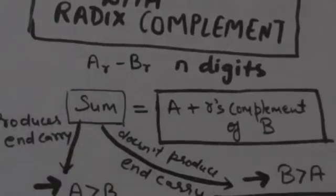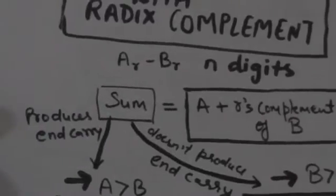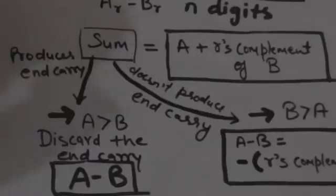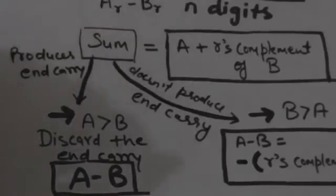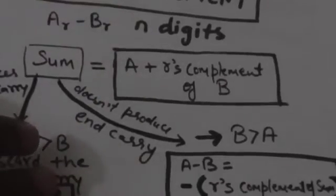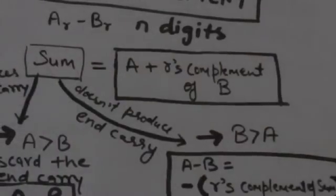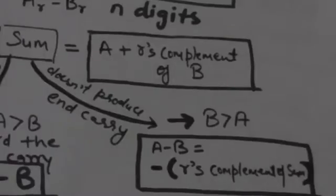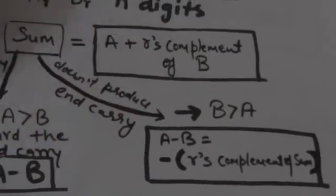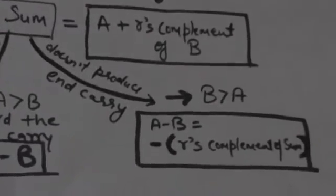If the sum of A and R's complement of B produces an end carry, then it means A is greater than B. We will discard the end carry and whatever is left in the sum would be A minus B — the desired result. If their sum doesn't produce any end carry, then it means B is greater than A, and A minus B will be the negative of R's complement of the sum. This will be more clear after we study these examples.